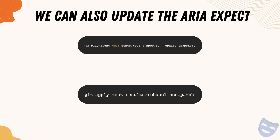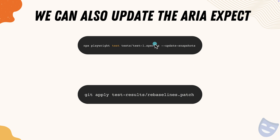You may ask: what happens if the locator's snapshot changes? How do we update it? We can update it very easily by running the command npx playwright test with --update-snapshots. When you do that, it generates a rebaselines.patch file under the test results folder, and you can then apply the git apply command to update the snapshot within your tests. This is similar to snapshot testing in other testing tools.